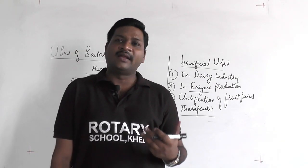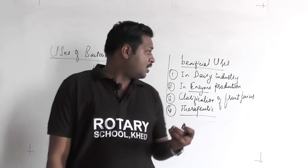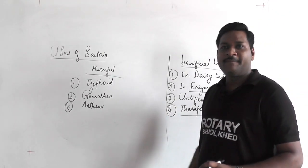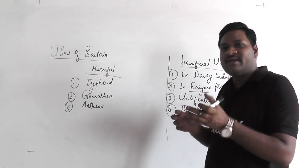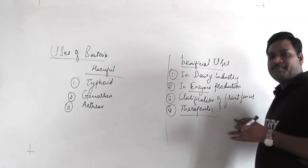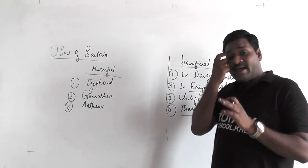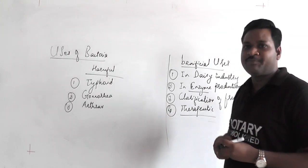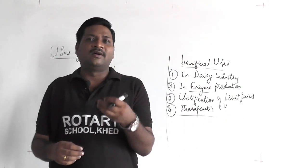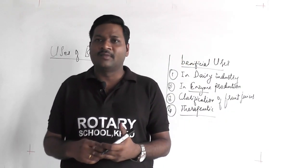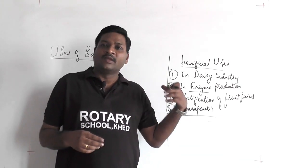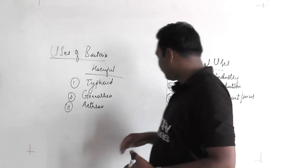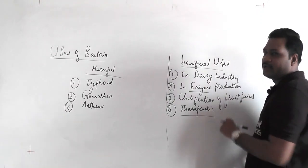We extract and isolate such antibiotics from bacteria, purify them, and store them in vials to be used when we get any injury or infection by bacteria. Through pharmaceutical industries, medicine is formulated so it can be administered orally to human beings and other animals. That is the therapeutic use of bacteria.